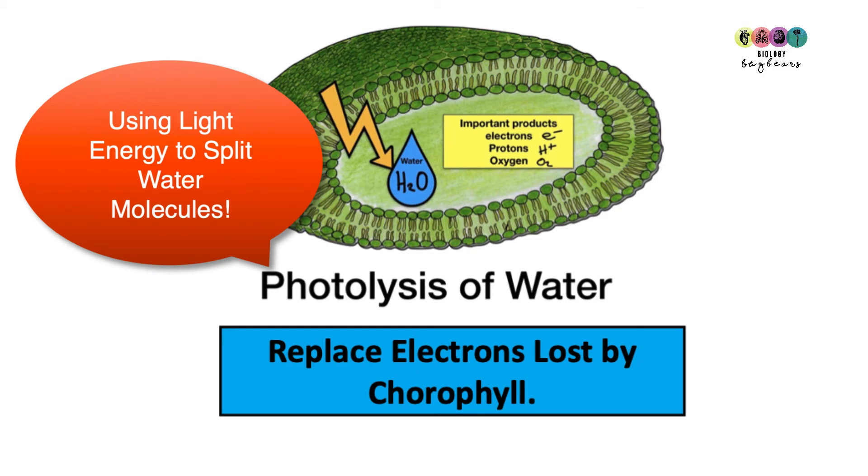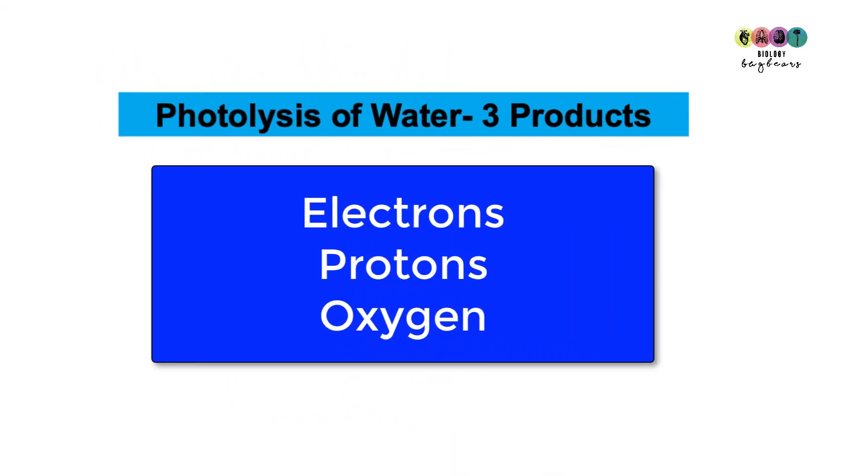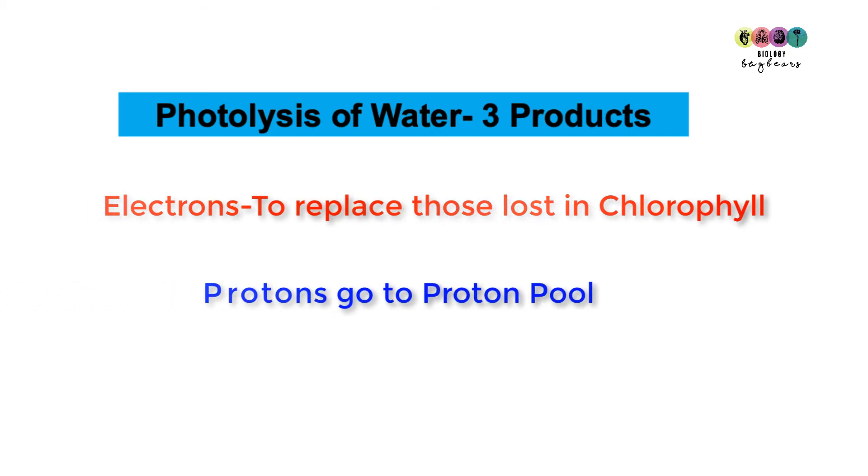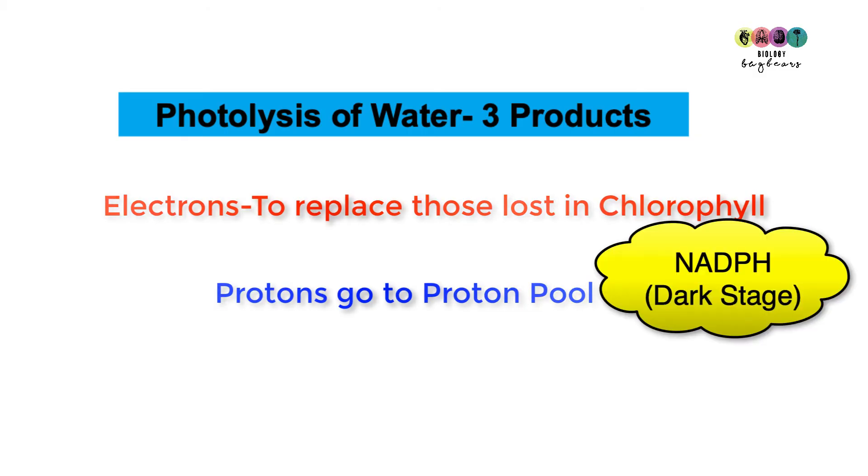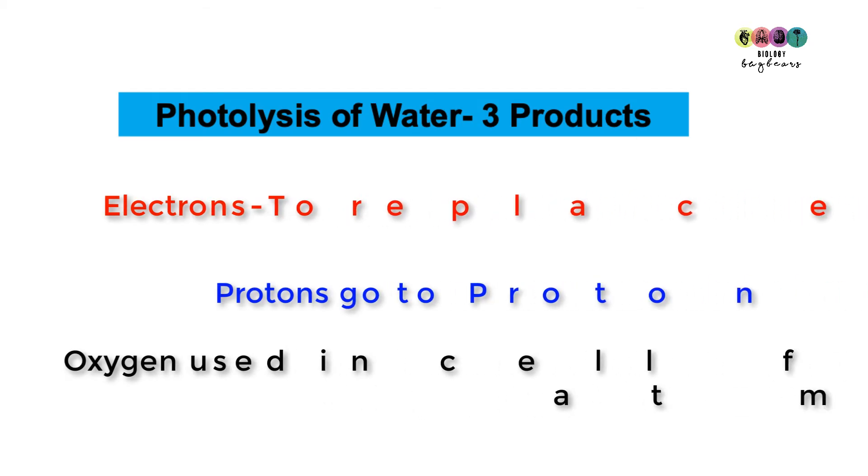When you split water molecules using light energy, you get three products: electrons, protons, and oxygen. The electrons go back to chlorophyll to replace those lost. The protons go into a proton pool but eventually will get picked up by NADP+ to form NADPH. They're ultimately going to the dark stage reactions, and the oxygen will either be used internally in the plant cell for respiration or released to the atmosphere.